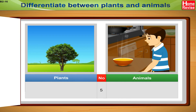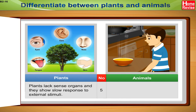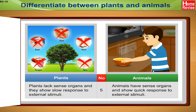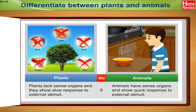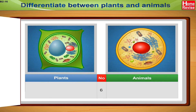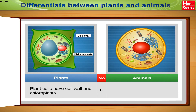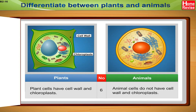5. Plants lack sense organs and they show slow response to external stimuli. 6. Plant cells have cell wall and chloroplasts, while animal cells do not have cell wall and chloroplasts.